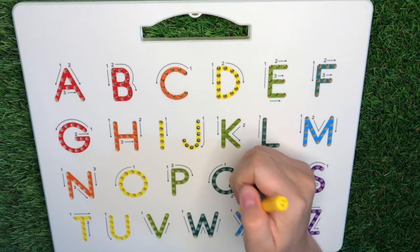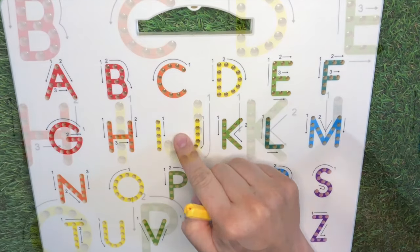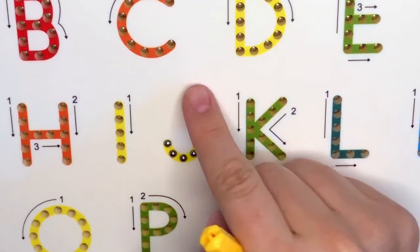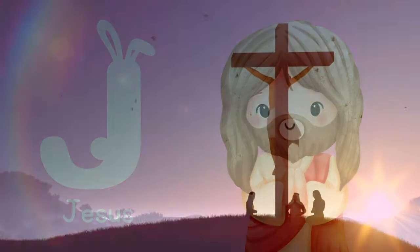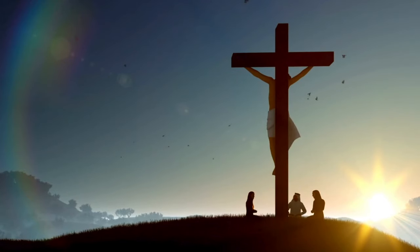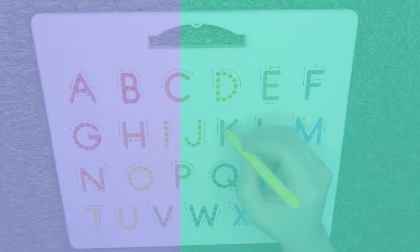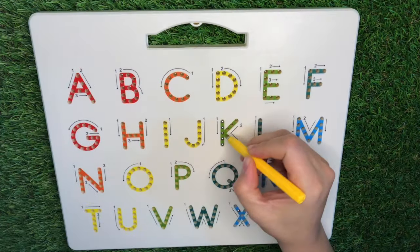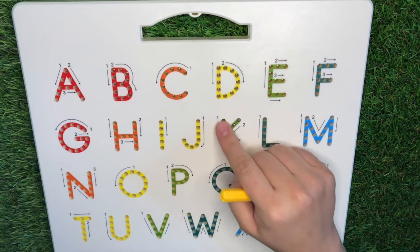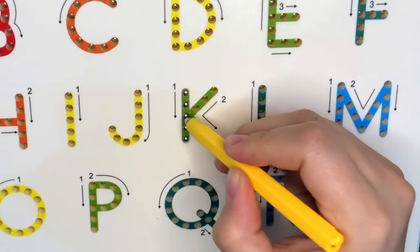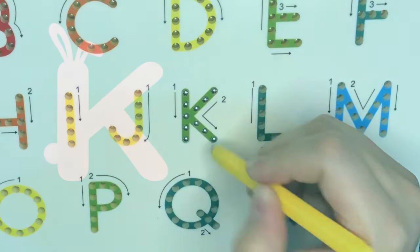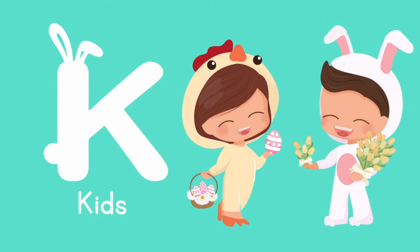J is for the Son of God — yes! J is for Jesus! Letter K is for kids.